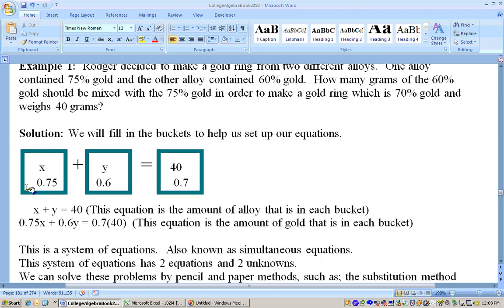Think of this as a container that contains the alloy that is 75% gold. We don't know how much of this stuff we have, so we'll say we have X grams of this alloy that is 75% gold. A gold ring, by the way, is not 100% gold. Now this bucket, think of this as being a bucket that contains an alloy which is 60% gold. 40% of it is some other type of metal and we don't know how much of this we have. We're trying to put these two together so that we end up with a gold ring that is 70% gold and weighs 40 grams.